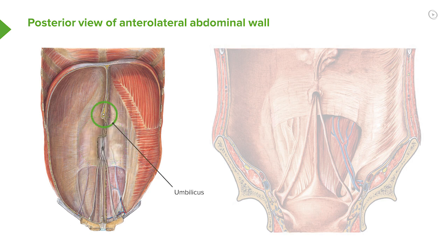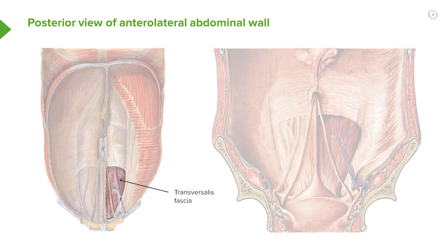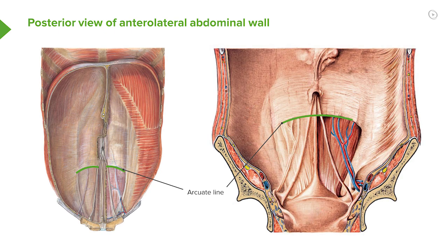We can see we've got the umbilicus here and we can importantly see the arcuate line here. This is where we have lots of membrane lying posterior to rectus abdominis and then all of a sudden it stops and the only structure we have behind rectus abdominis is transversalis fascia. So we're standing where the intestines would be, looking forwards, and we're seeing the arcuate line here.